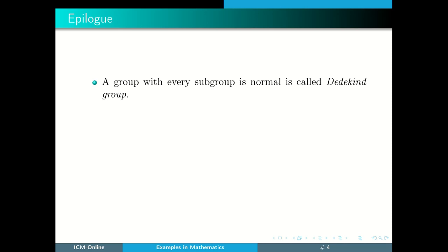Such a group is called a Dedekind group. That is, a group with every subgroup is normal is called a Dedekind group.